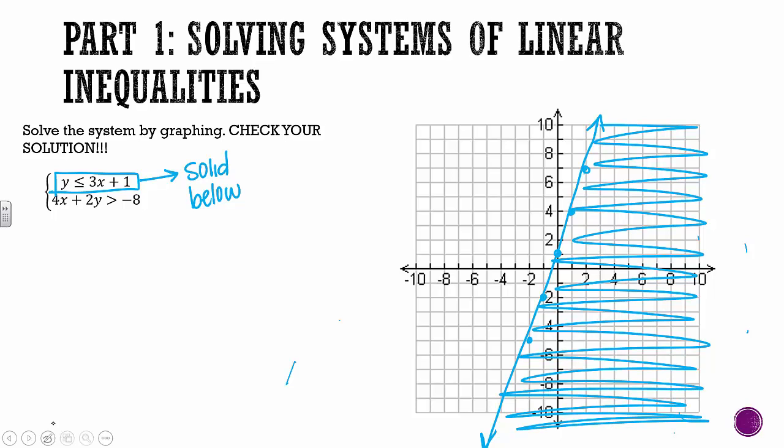And remember, you want all the y values that are below this line. So it's everything on this side. And then the next one is not in y equals mx plus b form. So let's get it there. Let's move the 4x over, and we'll divide everything by two.